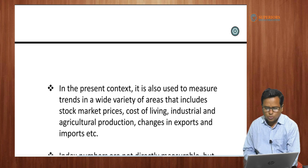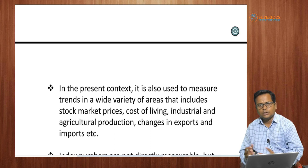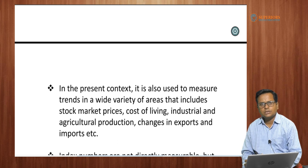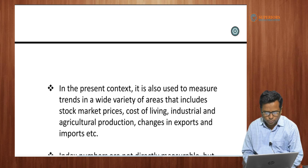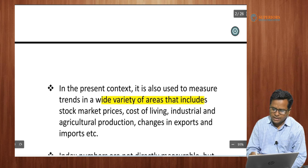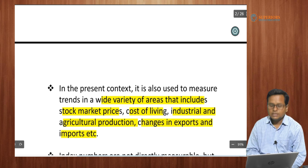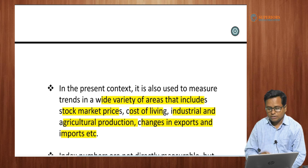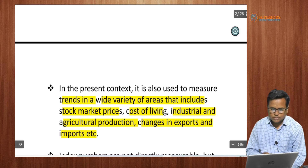Nowadays, index numbers are also used to see what kind of changes are taking place in the output level of a country, in the prices of shares, and in the output of industry and agricultural production. We can see that a wide variety of areas — including stock market prices, cost of living, industrial and agricultural production, and changes in exports and imports — use index numbers for comparison.